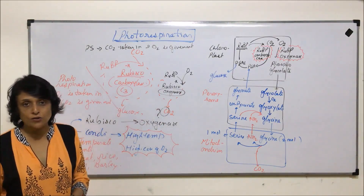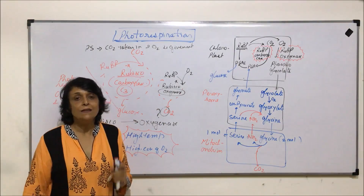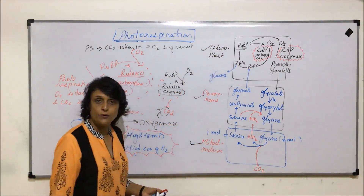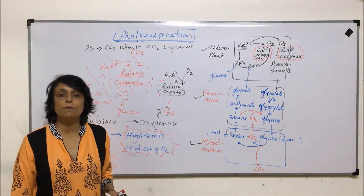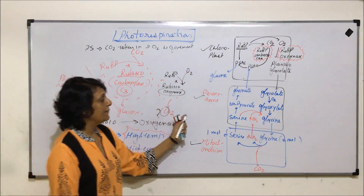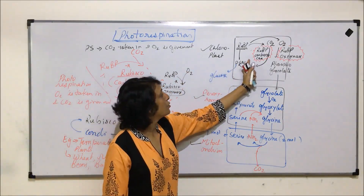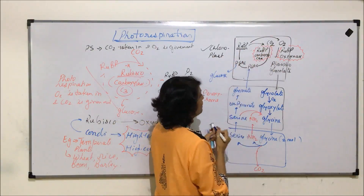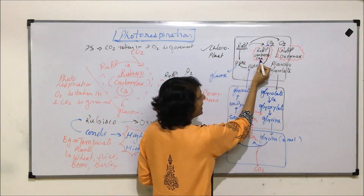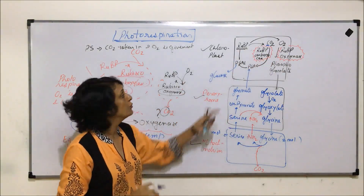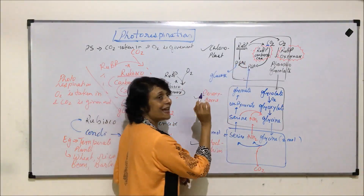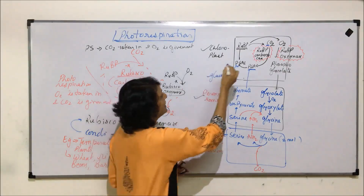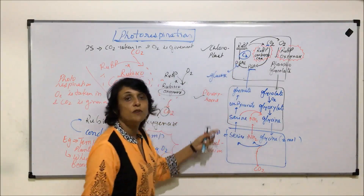Now let us talk about the detailed process. This process involves three organelles: chloroplast, peroxisomes, and mitochondria — the entire process is completed in these three. In the C3 cycle under normal conditions, Rubisco accepts carbon dioxide, acting as carboxylase, producing phosphoglyceric acid, then phosphoglycerate, and finally glucose synthesis. That is the normal C3 cycle.